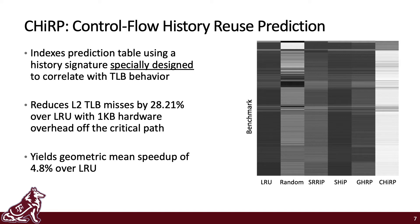CHIRP indexes a prediction table using a history signature specially designed to correlate with TLB behavior. It reduces L2 TLB misses by 28.21% over LRU with just 1 kilobyte of hardware overhead off the critical path. CHIRP yields a geometric mean speedup of 4.8% over LRU. In the heatmap on the right, we now have a new column for CHIRP at the rightmost, which is quite light compared to the other columns, showing that CHIRP maintains much hotter and more frequently re-referenced entries.